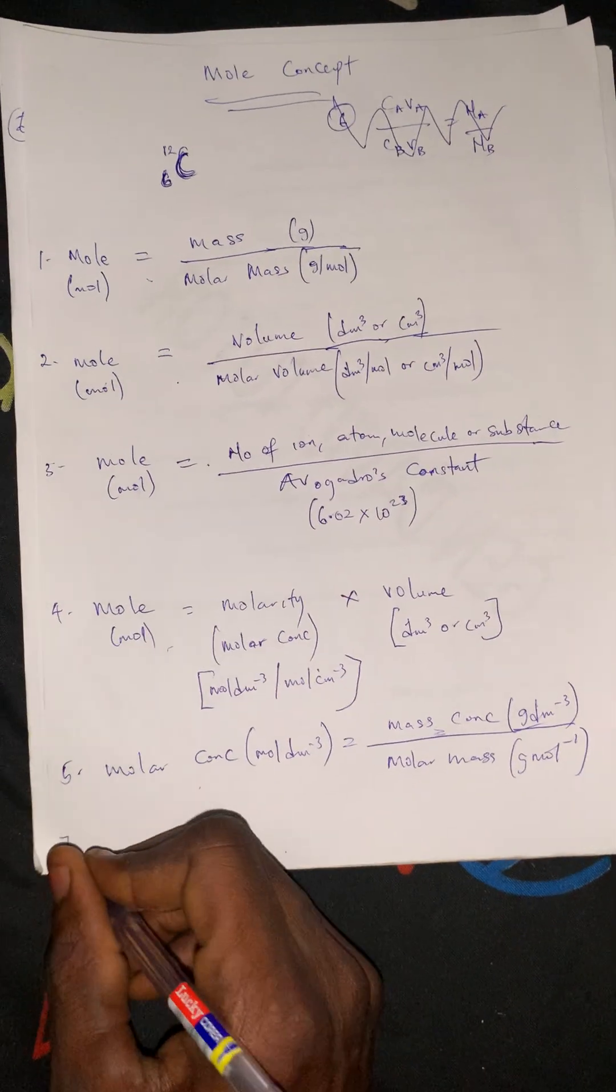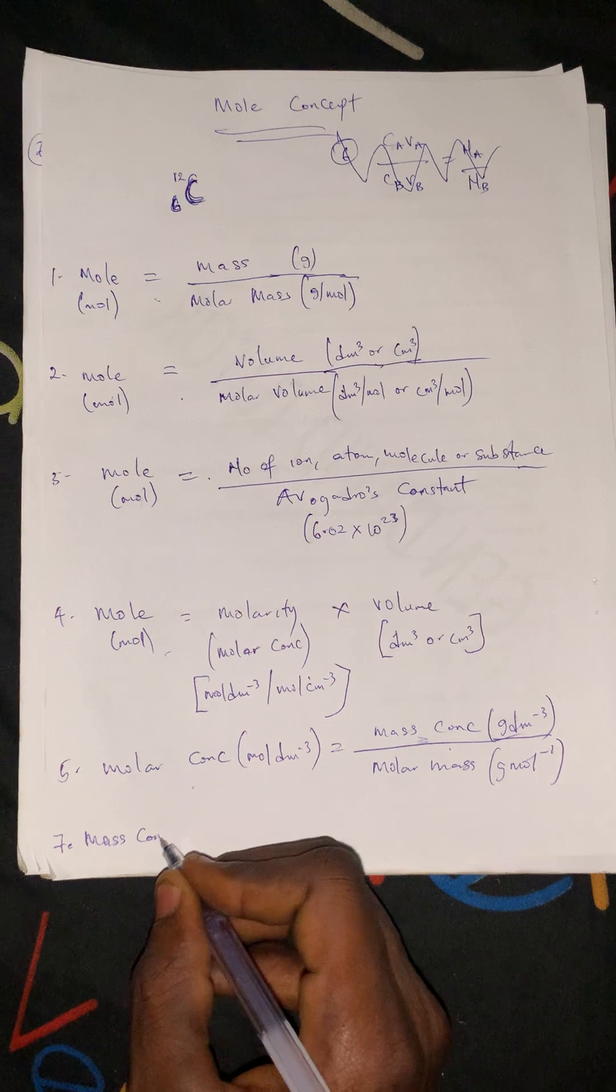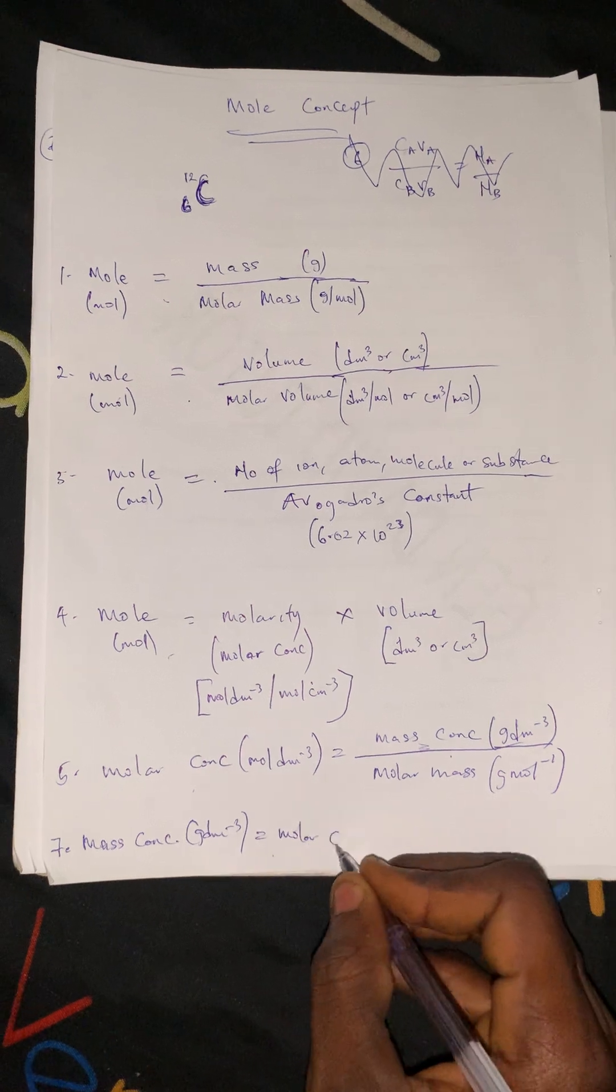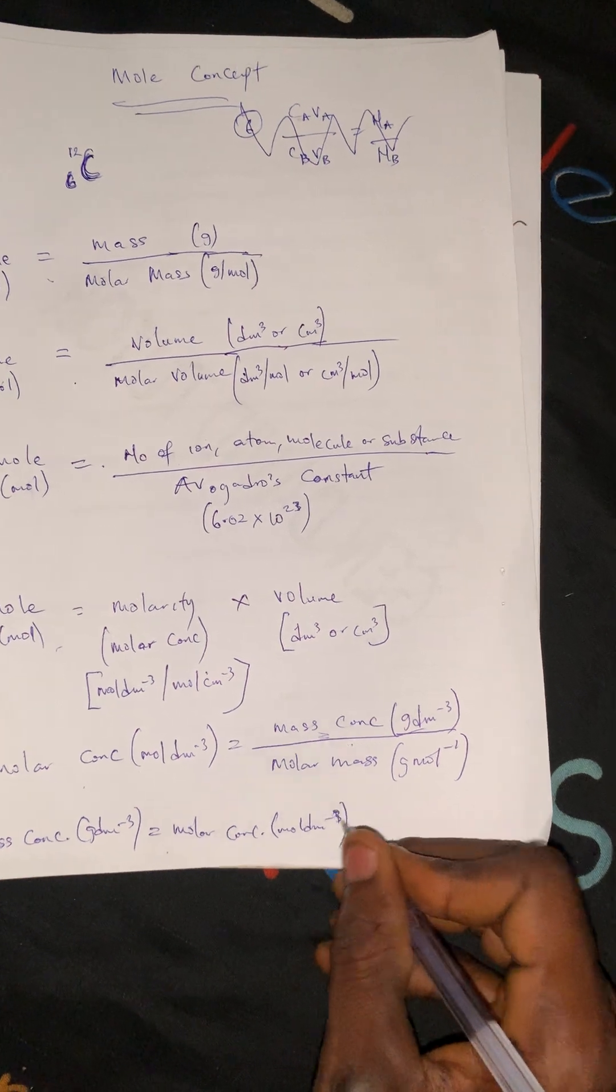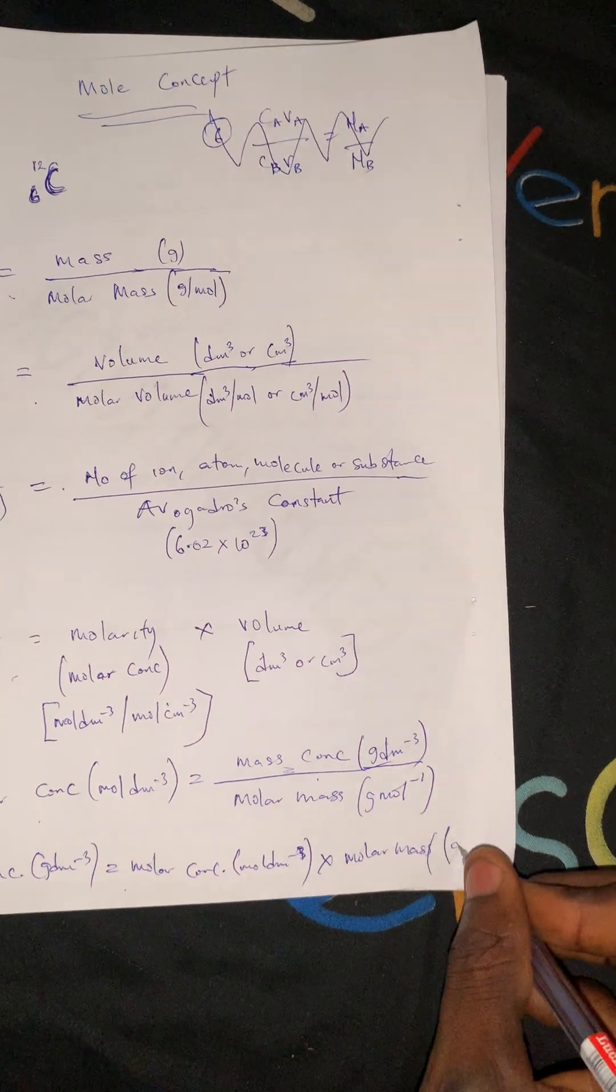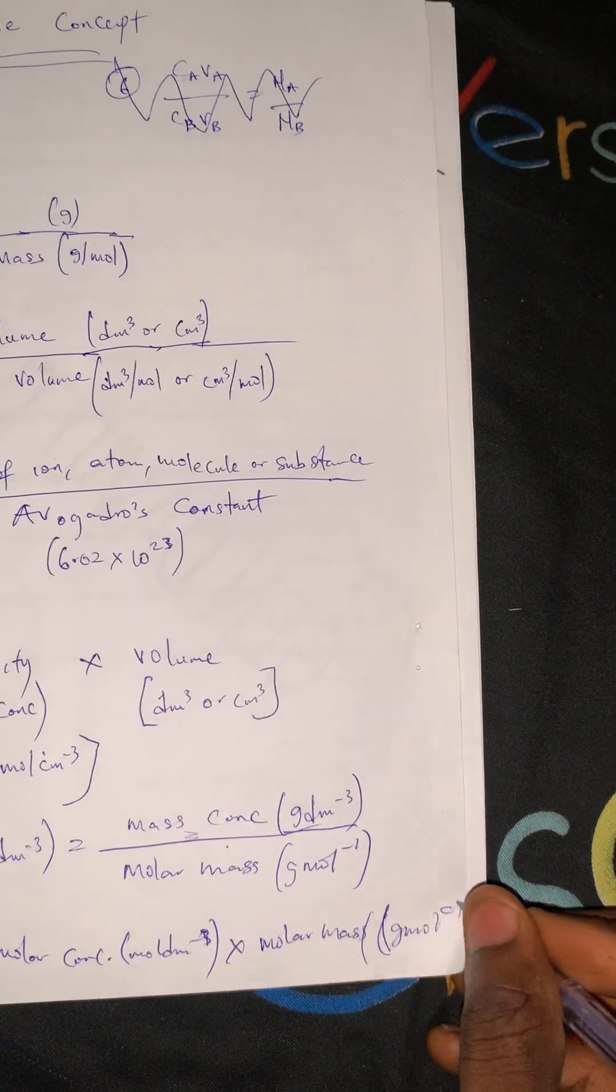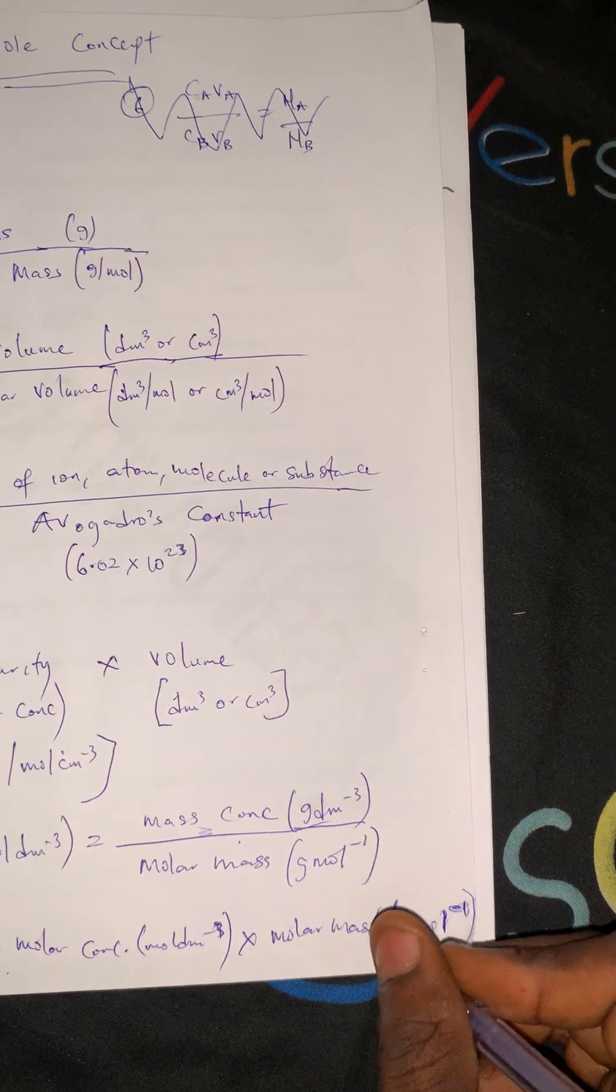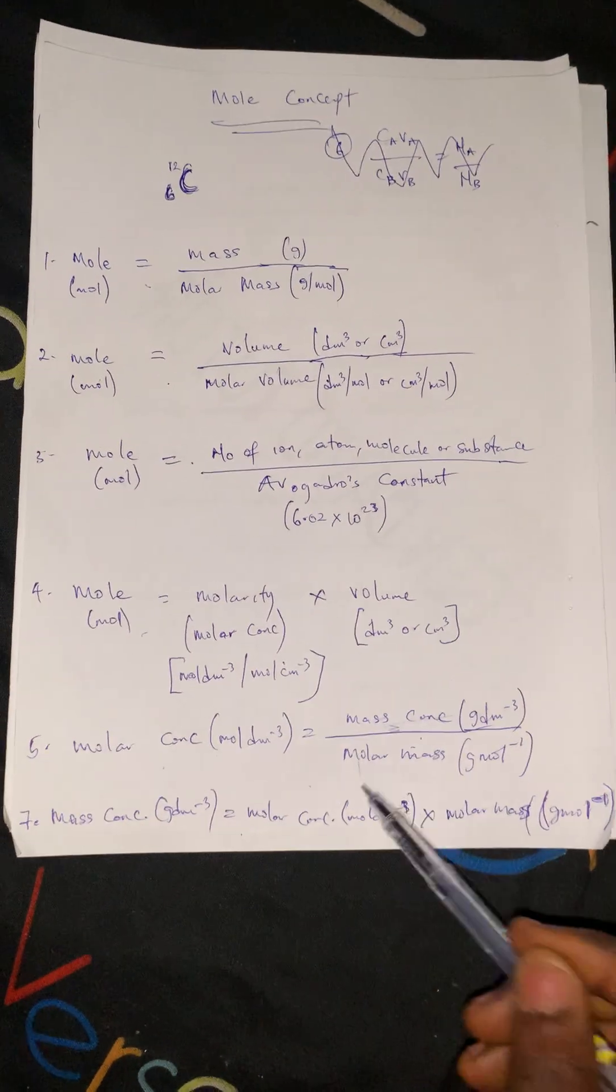We can generate a seventh formula. The mass concentration in grams per dm³ can equal the molar concentration in moles per dm³ multiplied by molar mass in grams per mole. This formula is derived from the previous one.